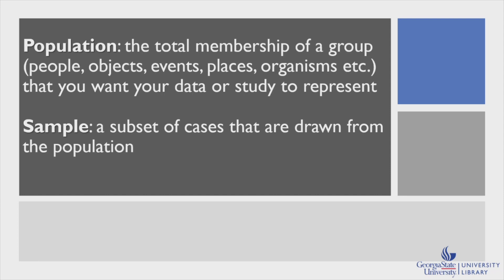As mentioned in the previous video, it can take a lot of time, computing power, and storage space to process big data. So if you take a random and representative sample, then it can be run through the same algorithms or statistical analyses faster and more efficiently.